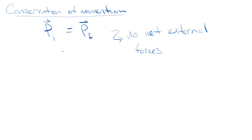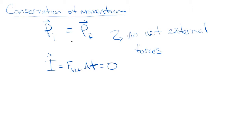What that implies then is that the impulse, which is equal to the net force times delta t, is equal to zero in this case. Those two things go together.